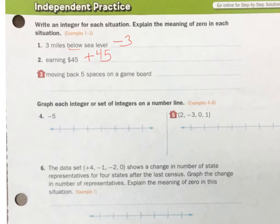Number 3. Moving back 5 spaces on a game board. Moving back, which is a negative thing. You don't want to move back, usually. So it would be a negative 5. The 0 represents that you didn't move back or you didn't move forward.